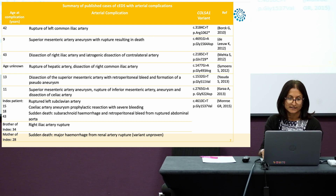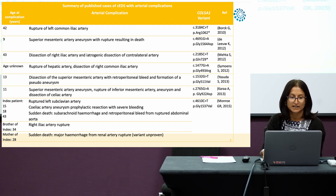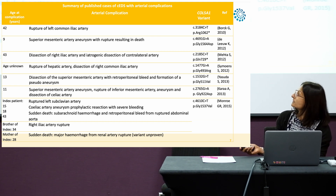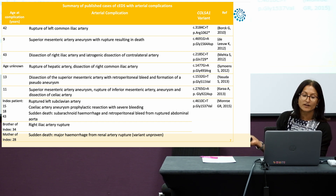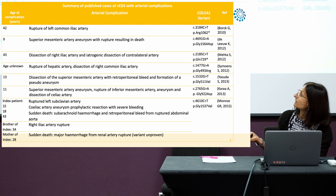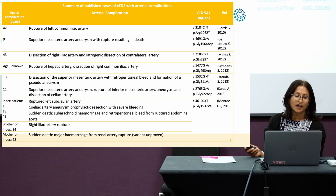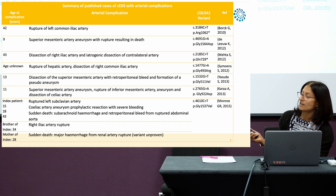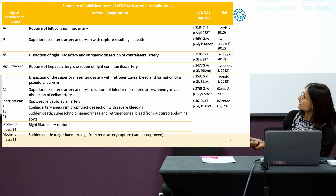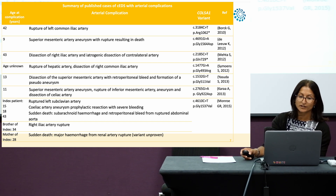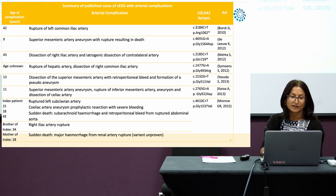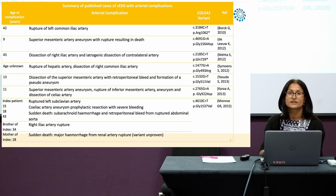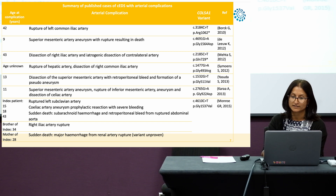This is a summary of the cases that have been published of classical EDS with arterial complications. The things that are important to note: you can see the age range is quite varied — there's one as young as nine, going up into the forties. There are three patients all from one family. If you look at the distribution of the arteries, it's very much medium-sized vessels, very similar to what you would see in vascular EDS.